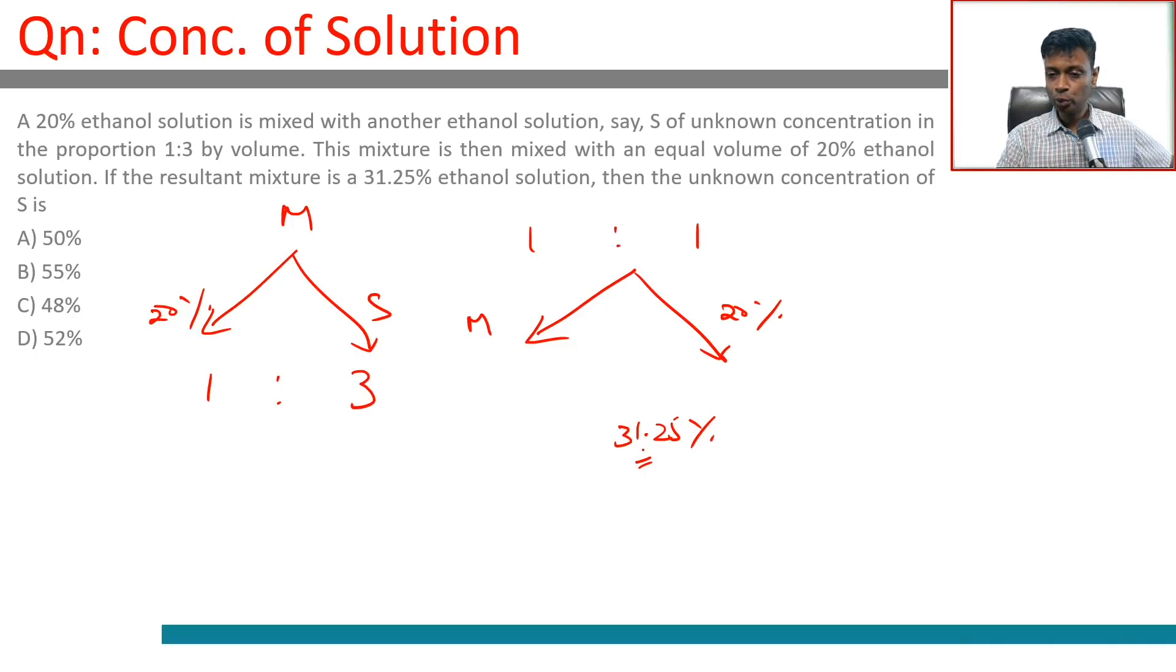31.25 is 11.25 more than 20. A further 11.25 will mean the mixture should be bang in the middle, the midpoint, because they are mixed in equal ratios. So 20% plus 11.25 is 31.25, and 31.25 plus 11.25 is 42.5. So the mixture should be 42.5%. So this is 42.5% mixed in the ratio 1 is to